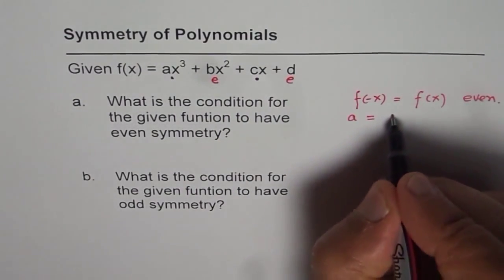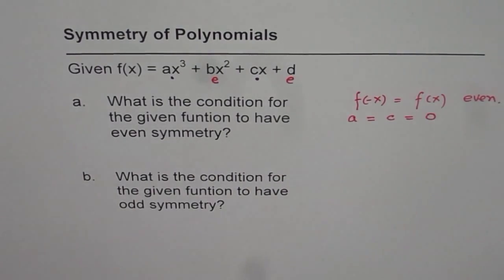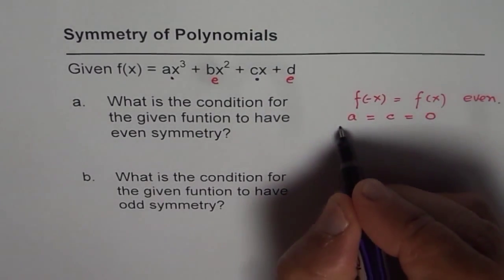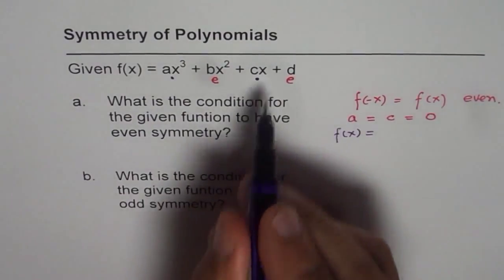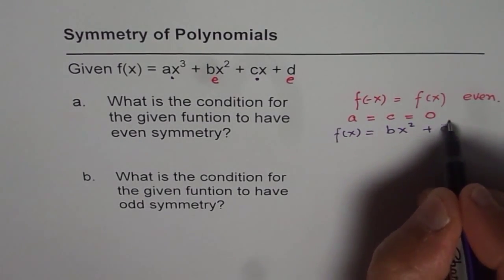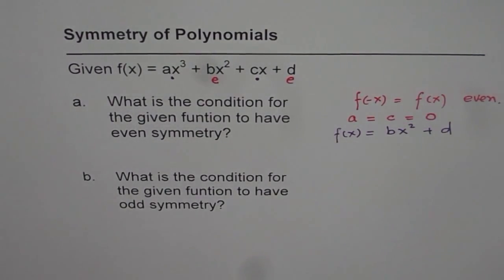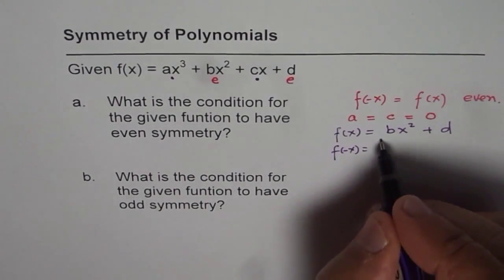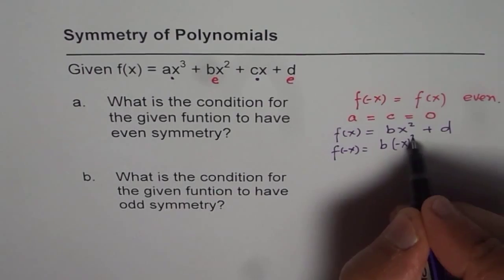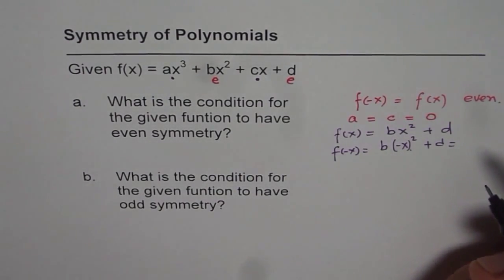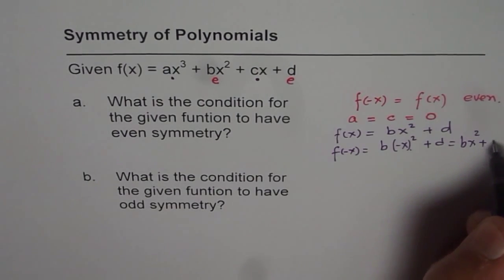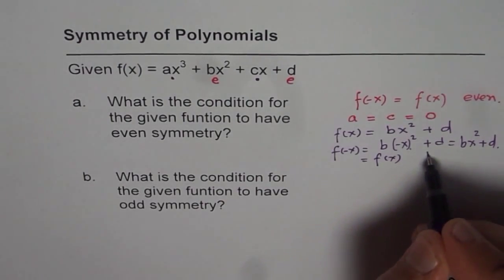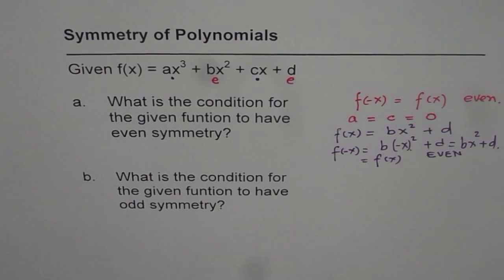Therefore, to make this function even, the condition is that a and c must equal zero. Only then will the function be even. That means the function becomes f(x) = bx² + d. If I replace x with −x, then f(−x) = b(−x)² + d = bx² + d, which is the same as f(x). Therefore it is even.